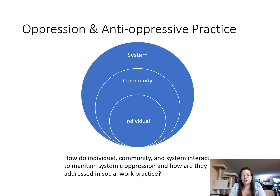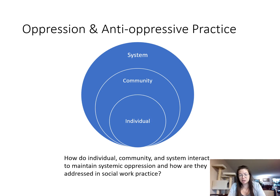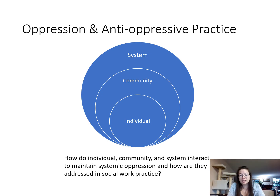We need to consider how the individual, community, and systems interact to maintain systematic oppression. Continuing with our substance use example: at the individual level, certain people are more at risk for developing substance use disorders depending on their mental health status. People with mental health issues can turn to substances to medicate an untreated condition. That's related to what's going on in the community — if the community doesn't have sufficient mental health supports, those needs go unmet and people are forced to medicate in other ways. The system underlies both of these factors by determining what resources are provided at the community level and how, as a society, we view these issues.